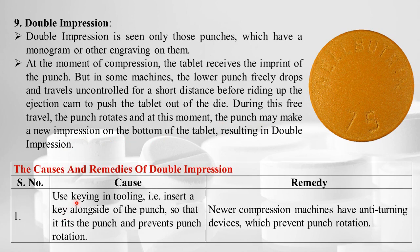The cause and remedy: we can use keying in the tooling — insert a key alongside the punch so it fits the punch and prevents it from rotating. Newer compression machines have an anti-turning device which prevents punch rotation.